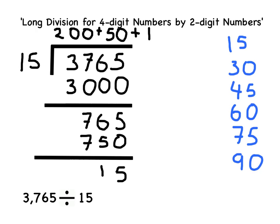Now my long division is complete. Looking at the top of the division I can see that 3765 is made up of 200 15s added onto 50 15s added onto 1 15.